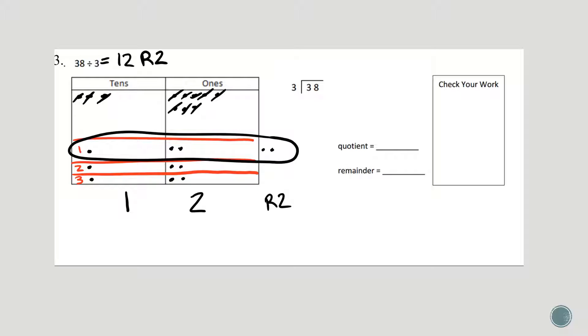I can also show this with my standard algorithm. 3 divided by 3 is 1, 1 times 3 is 3, and if I subtract I get 0. My next step is to bring down my 8. 8 divided by 3 is 2, 2 times 3 is 6, 8 minus 6 is 2. And there's my remainder, because I have no other digits to bring down. My quotient is 12, my remainder is 2, and I can check my work.